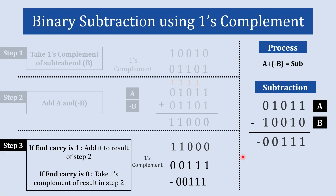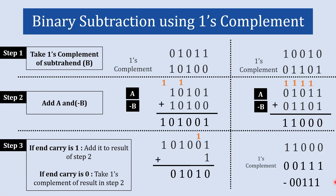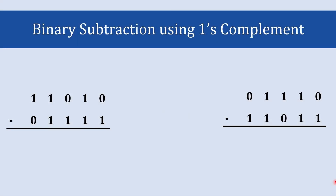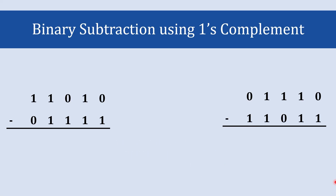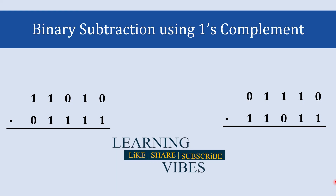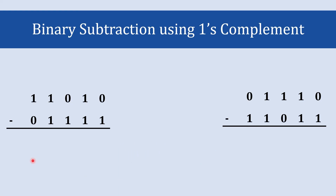So this is how you use one's complement to do binary subtraction. The entire process: step 1 — take one's complement of the subtrahend; step 2 — add the minuend and one's complement of the subtrahend; step 3 — if final carry is 1, add it to the LSB; if final carry is 0, take one's complement and make the answer negative. Try the two practice examples and write your answers in the comments. In the next video we'll learn binary subtraction using two's complement, which is generally preferred over one's complement.